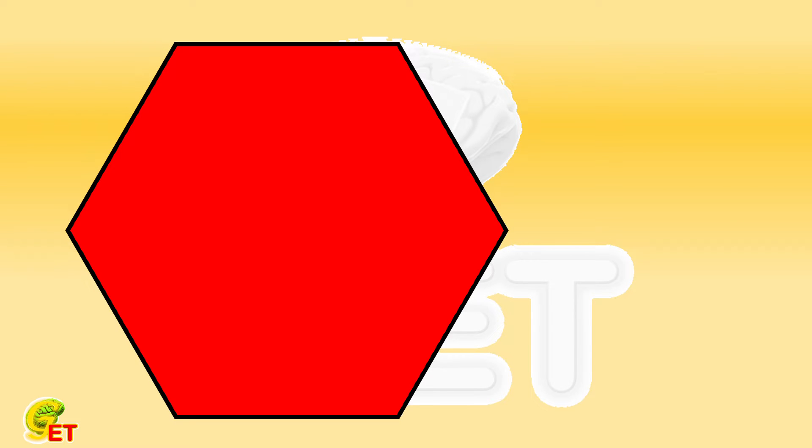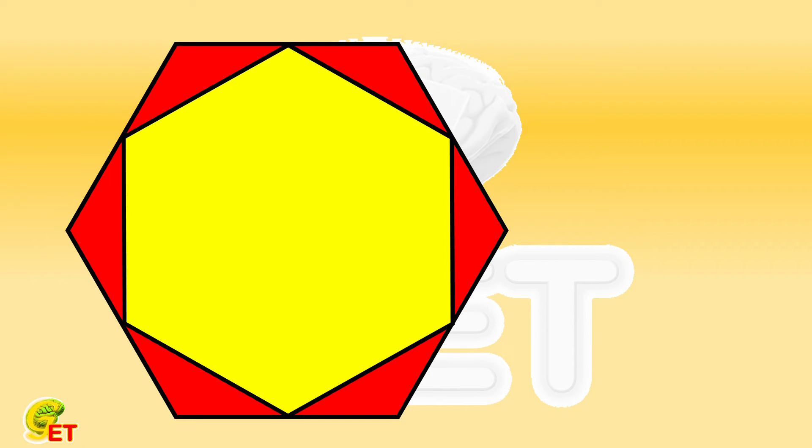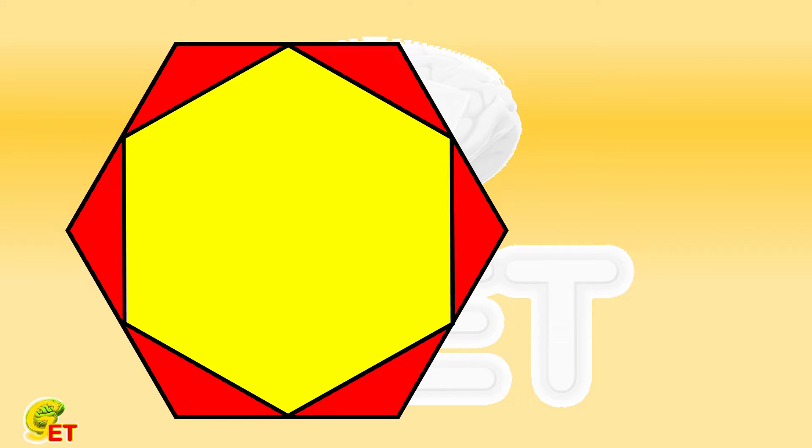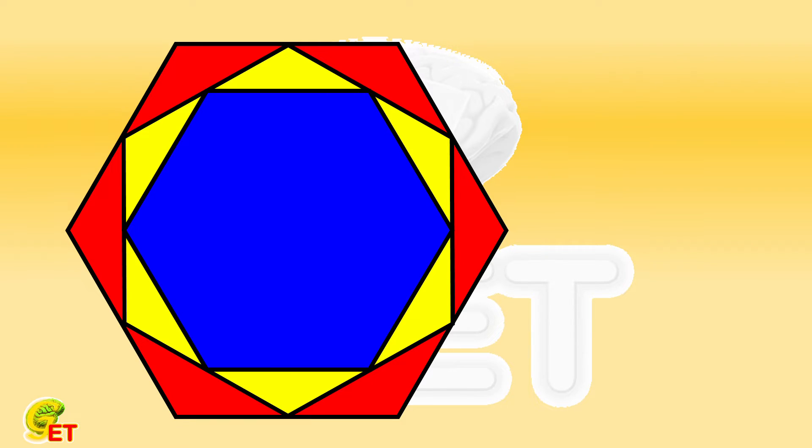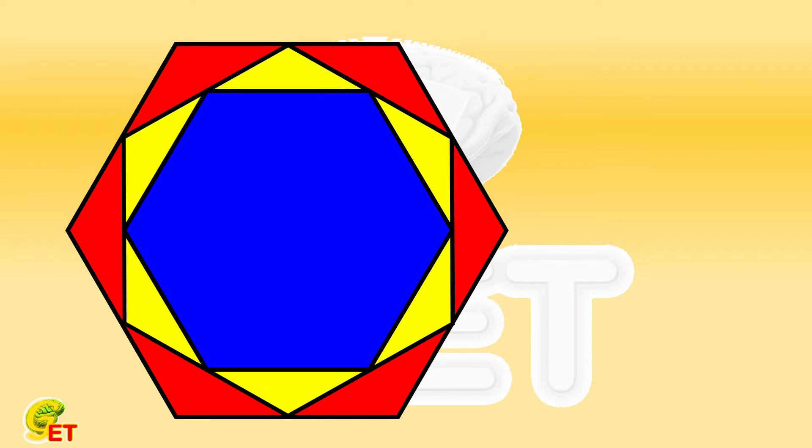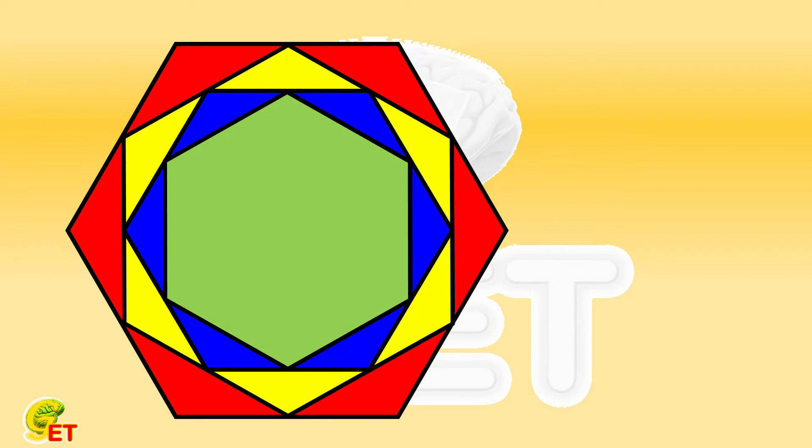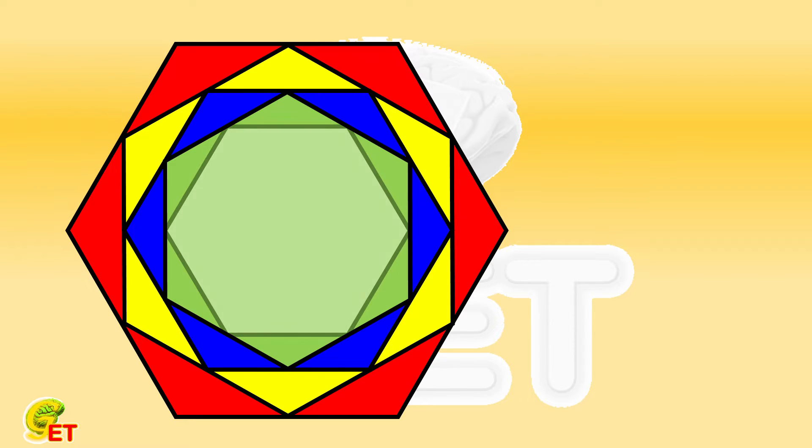From the red regular hexagon, we cut out a yellow regular hexagon and 6 red triangles. From the yellow regular hexagon we cut out a blue regular hexagon and 6 yellow triangles in the same way, and then from the blue regular hexagon we cut out a green regular hexagon and 6 blue triangles, and so forth. One can repeatedly cut out an infinite number of regular hexagons and corresponding triangles.